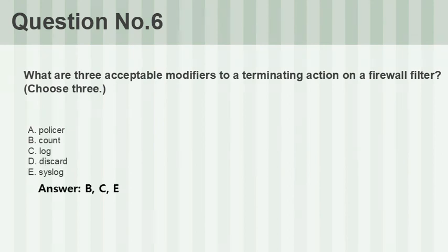Question number six: What are three acceptable modifiers to a terminating action on a firewall filter? Choose three. A. Policer. B. Count. C. Log. D. Discard. E. Syslog. Answer: B, C, E.